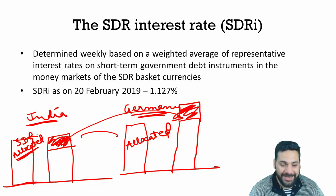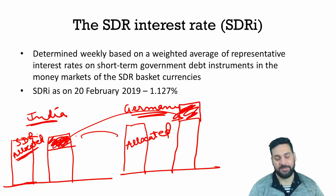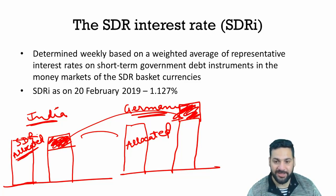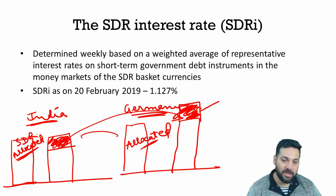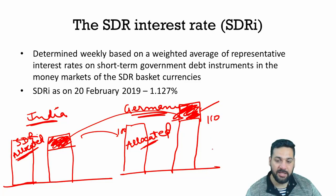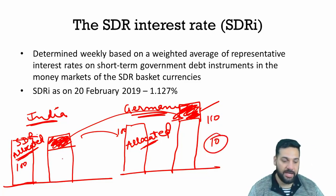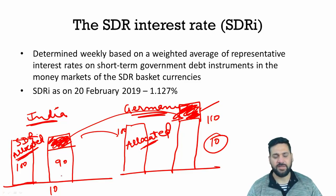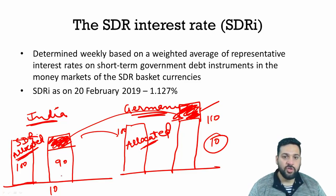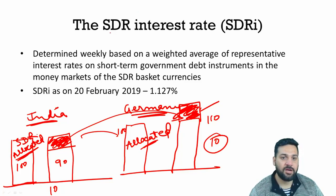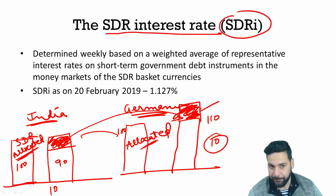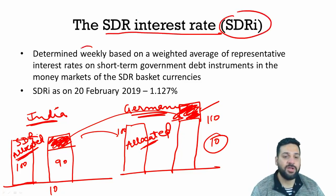India needs to pay interest on the SDRs it sold, while Germany earns interest on the extra SDRs it holds. For example, if the allocated amount is 100 and Germany now has 110, it earns interest on 10. If India had 100 and now holds 90, it pays interest on 10 — the net SDRs — according to the SDR interest rate.